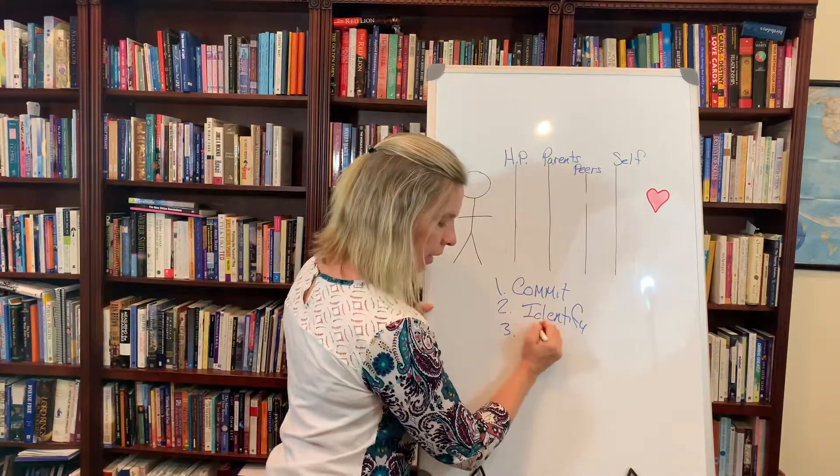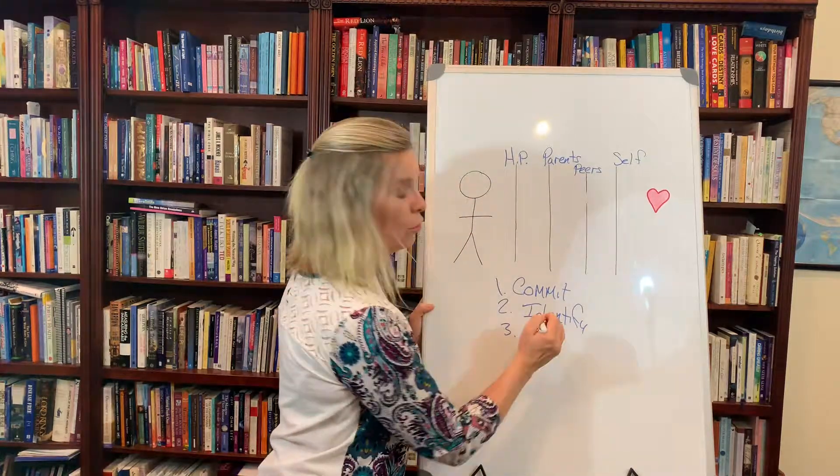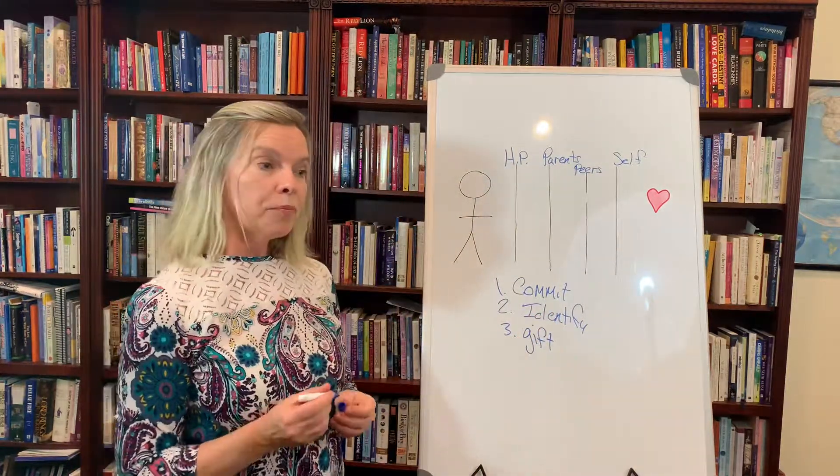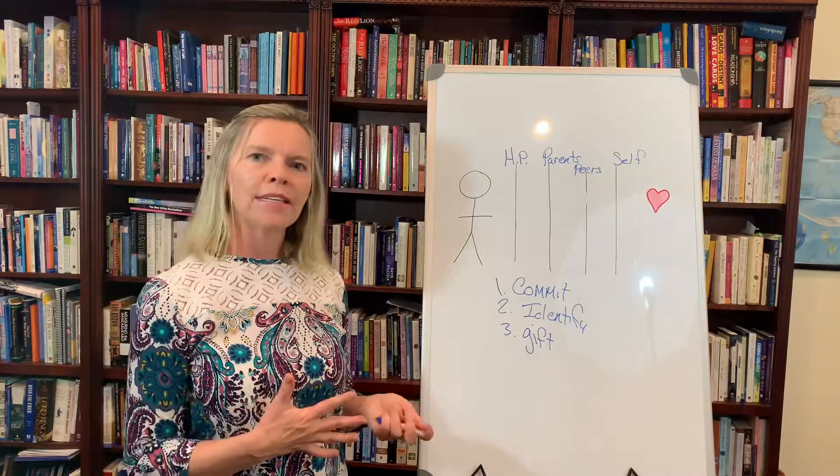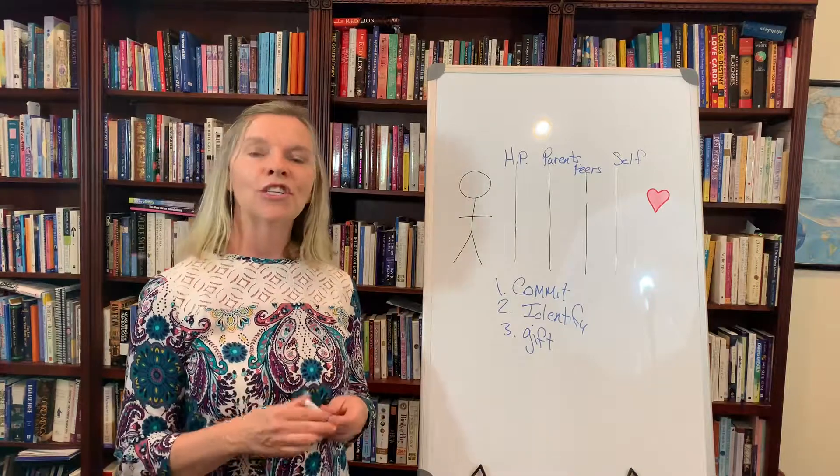And number three is to see the gift of each relationship. Usually that gift is because if there's somebody who has caused you a great deal of pain, their gift might have been to cause you a need to have forgiveness.